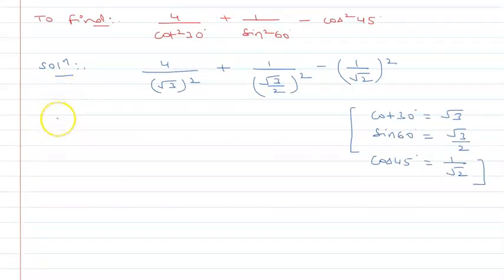Now if I simplify, this will be 4 upon root 3 square is 3, plus 1 upon root 3 square is 3 upon 4, so 2 square, minus 1 upon root 2 square is 2. So this will be 4 upon 3, plus 4 upon 3, minus 1 by 2.